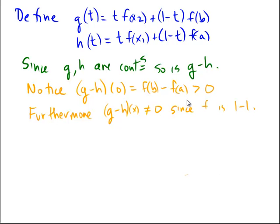So it's continuous, it's bigger than 0, and it never actually reaches 0. So what do we get to conclude from there? Let's evaluate this at t=1. What is (g-h)(1)? Well, (g-h)(1) would be equal to g evaluated at 1, which is f(x2), minus h evaluated at 1, which is f(x1).